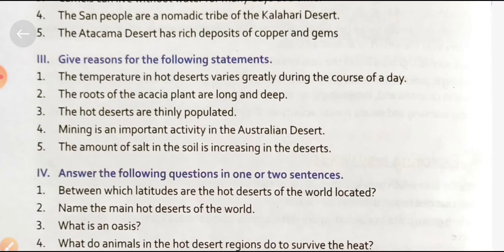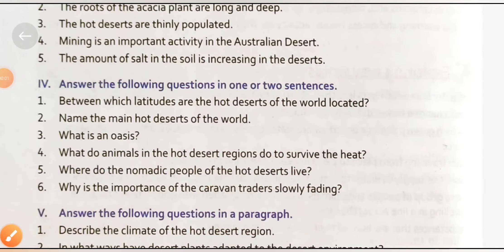Now answer the following questions in one or two sentences. First question: 'Between which latitudes are the hot deserts of the world located?' The hot desert regions are located near the tropics, between latitudes 15 degrees and 30 degrees north and south — in both the northern and southern hemispheres.